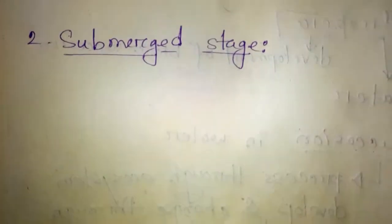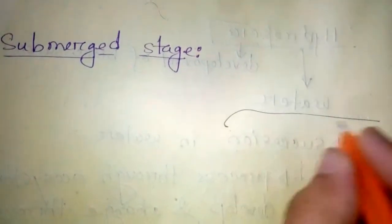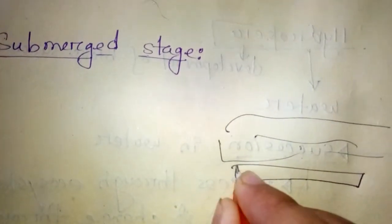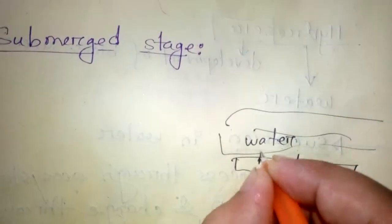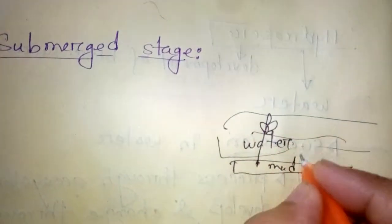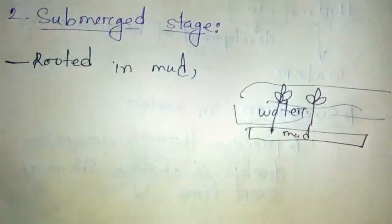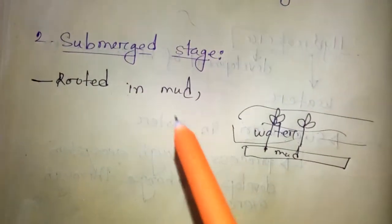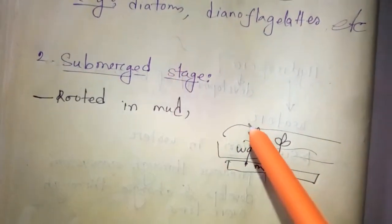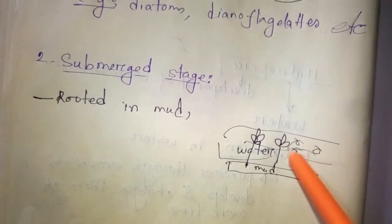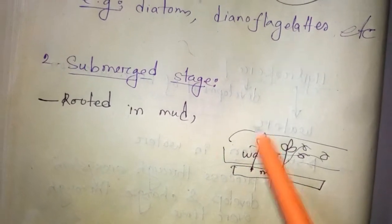Number two is submerged stage. Submerged stage plants are rooted in mud in water. The first stage, planktonic stage, plays a very important role in the submerged stage because when plankton die, they make nutrition for the second stage, the submerged stage.